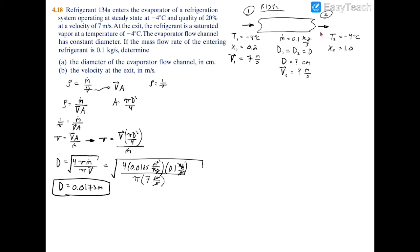For part B, we're looking for the exit velocity V2 in meters per second. You might be tempted to use the first law of thermodynamics, which includes heat transfer, work, enthalpy, velocity, and elevation changes — however, we don't have the heat transfer value for this evaporator, so we can't use that equation. Instead, I'll reuse the specific volume equation from before: v2 = V2 × (πd²/4) ÷ M-dot, with constant diameter and constant mass flow rate.